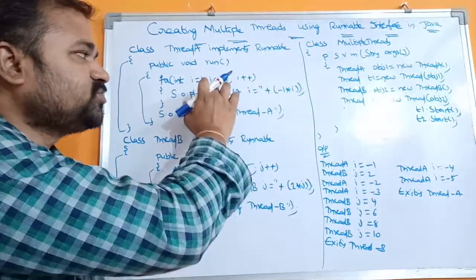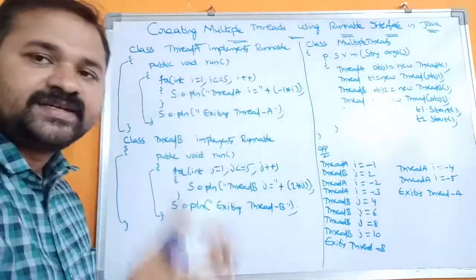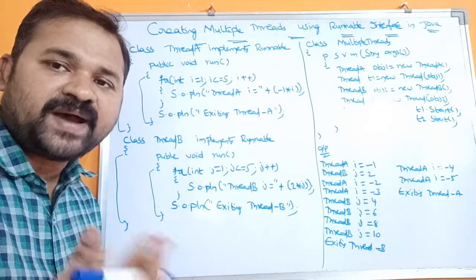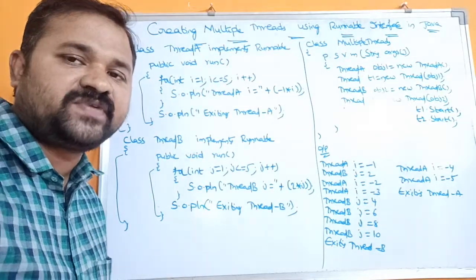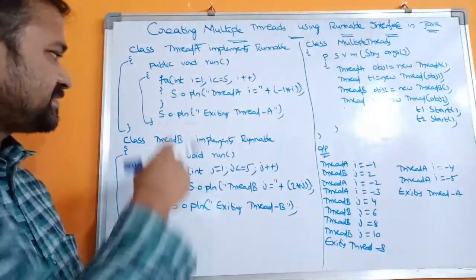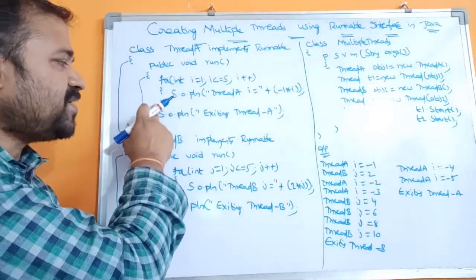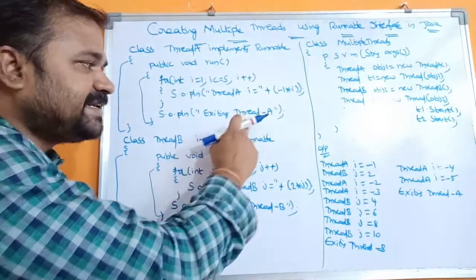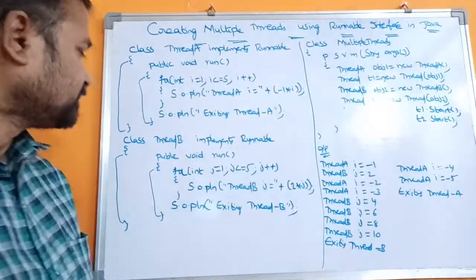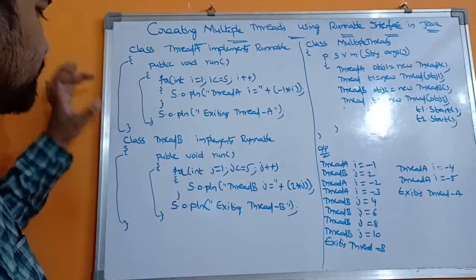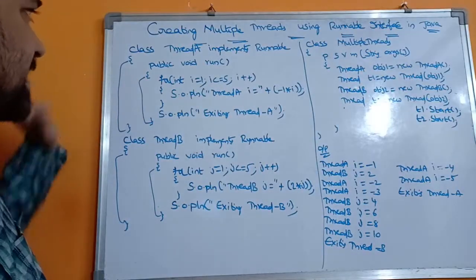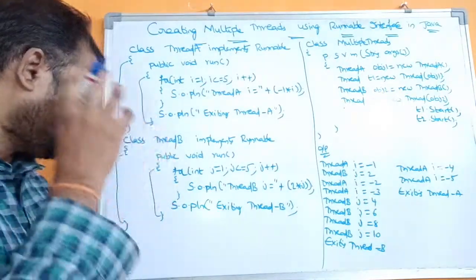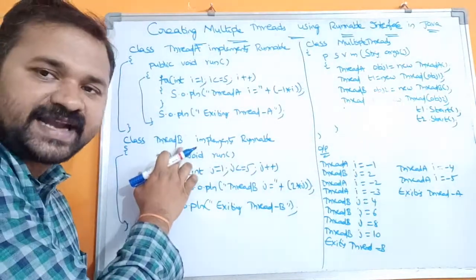So the output is: Thread A i = -1, Thread A i = -2, i = -3, i = -4, i = -5. Next, that is the end of the for loop. System.out.println("Exiting Thread A"). Next, the run method is over and the class declaration is over.